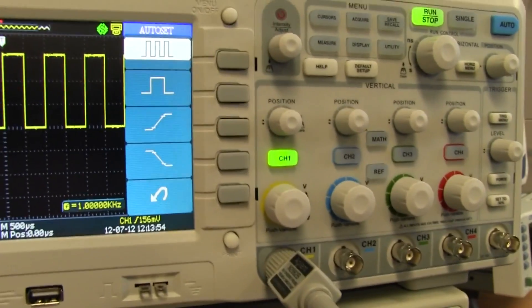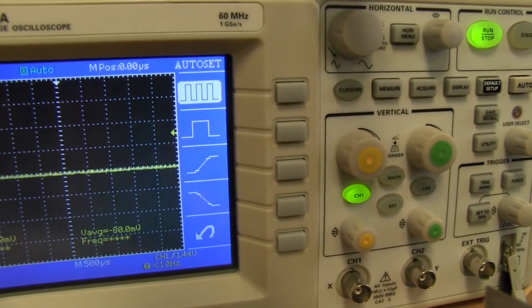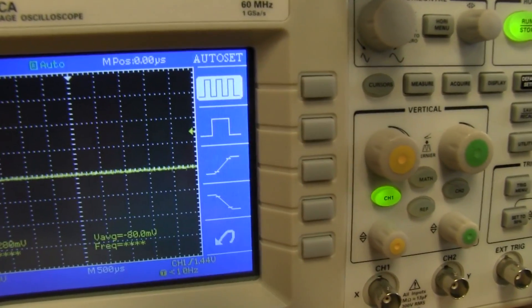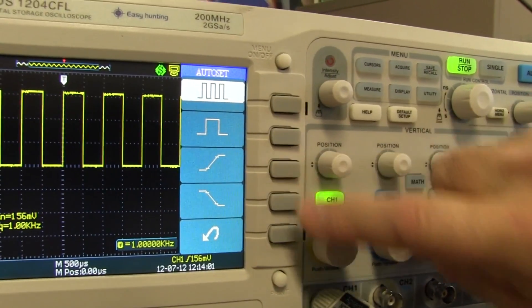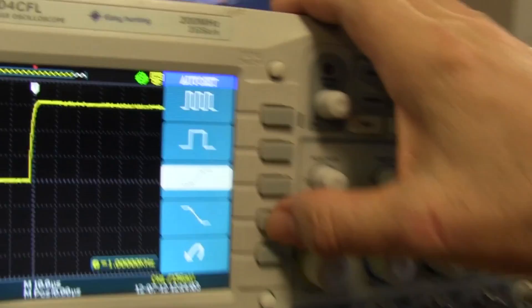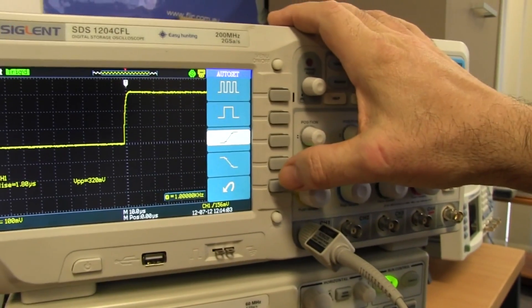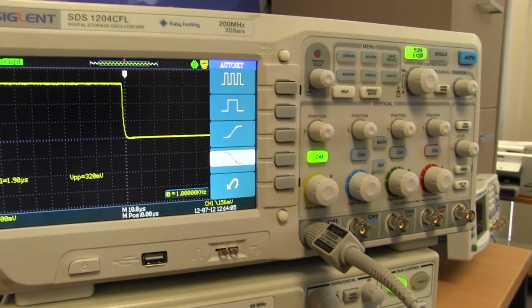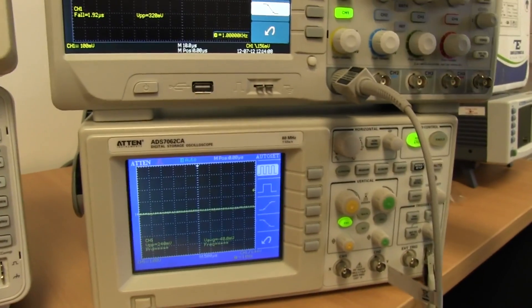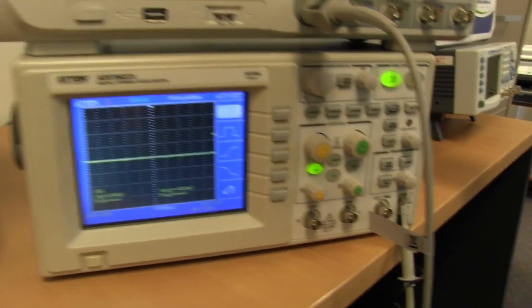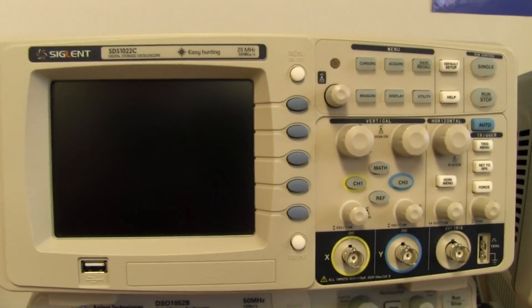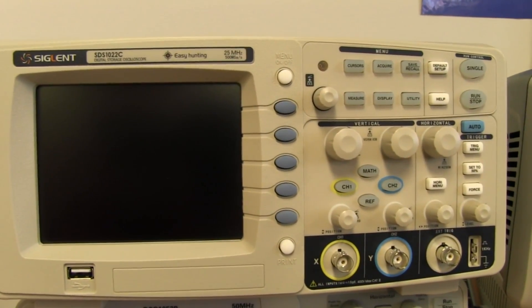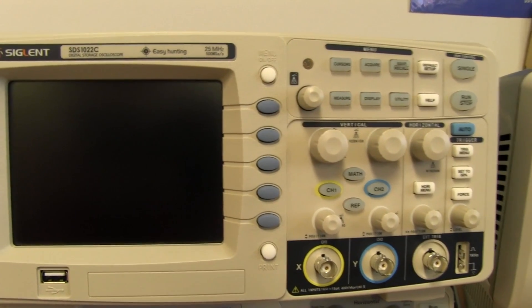And even this old one has a hardware frequency counter in it. And the new Siglent one, of course, also has hardware frequency counting as well. And the auto-set capabilities. You can see the auto-set allows you to jump directly to rising edge and falling edge as well. You can jump directly to it. But you can see the heritage of how we've gone from this one down here to this Siglent one up here with easy hunting technology. I love it.